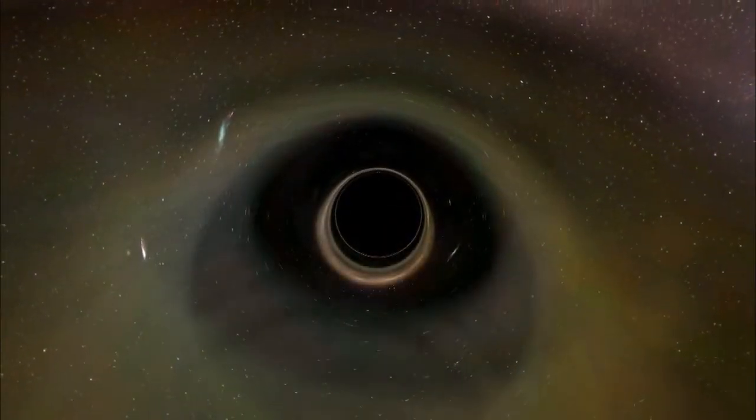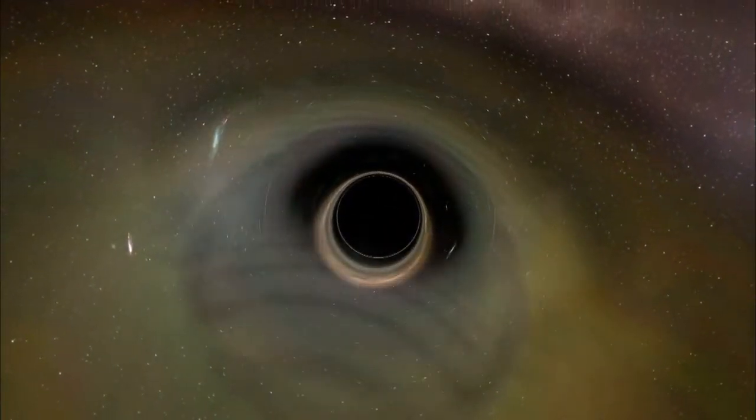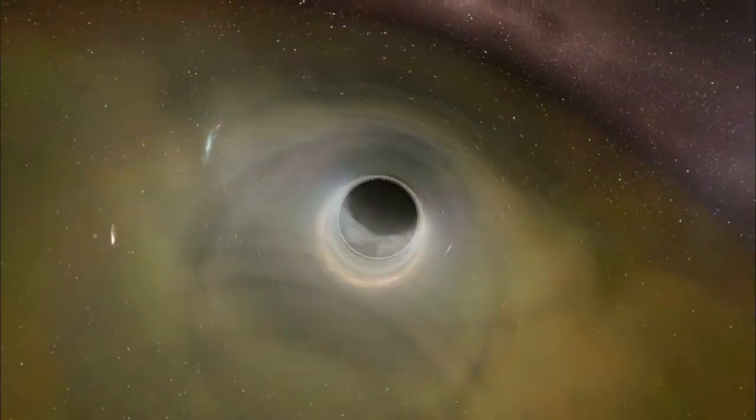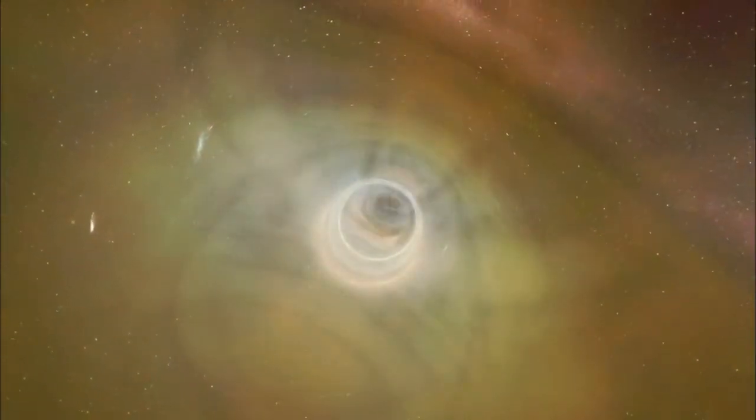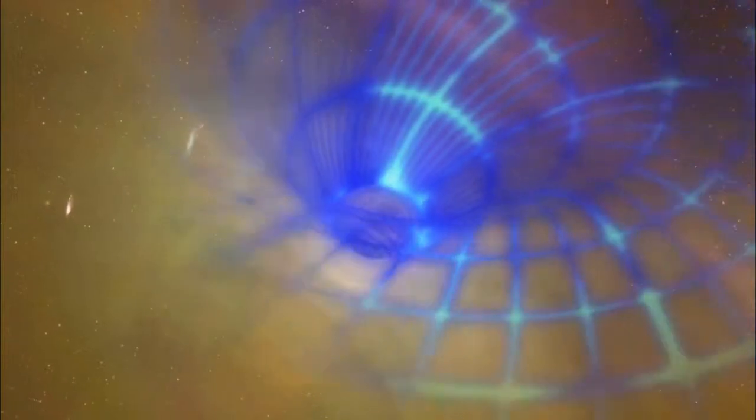Black holes are collapsed stars, massive objects crushed to a fraction of their original size. Gravity around them is so strong that, according to Einstein's math, a spinning black hole can literally drag space along with it, twisting it like an actual piece of cloth. The nearest black hole is trillions of miles away, making it a challenge to test this prediction.